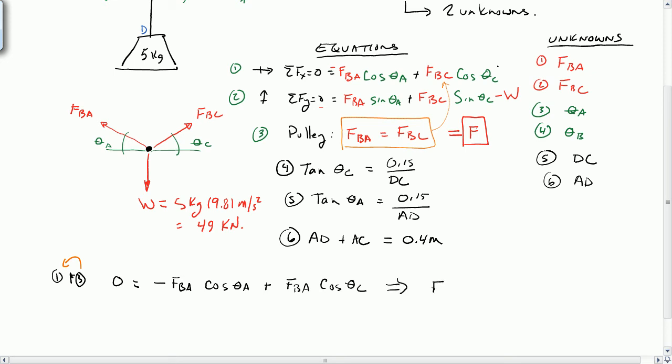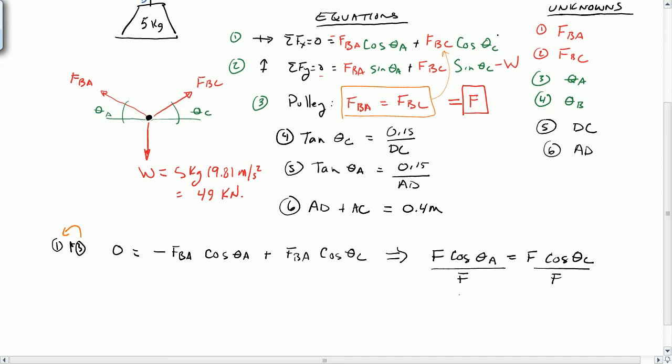So they're just one number. So I'll go ahead and make that substitution and simplify the equation I have down here. This gives me F cosine of theta A equals F cosine of theta C. Divide both sides by F, and what I get is cosine of theta A equals cosine of theta C. If I take the inverse cosine of those, I get theta A equals theta C equals theta. So I've simplified my life a little bit by getting this down to a single, these two are equal to each other.